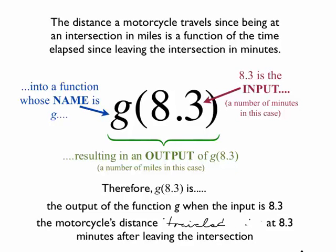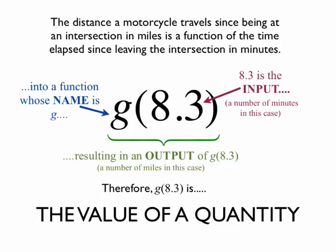It's crucial that you can just look at g(8.3) and see: this is the output of the function. It's the particular output when the input is what's in the parentheses — in this case 8.3. That would be the distance traveled by the motorcycle at 8.3 minutes after leaving the intersection. In other words, it's the value of a quantity. When you see notation like this with a number in the input, you're looking at the particular value of a quantity.